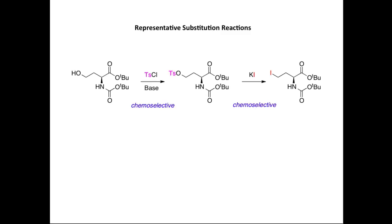We'll finish by looking at representative substitution reactions in synthesis. The first example starts with a protected amino acid derivative bearing a carbamate, an ester, and an alcohol. The goal is to convert the alcohol to the corresponding iodide. In the first step, tosyl chloride in the presence of base converts the alcohol into a tosylate — this is chemoselective, as the tosyl chloride only reacts with the alcohol and not the ester or carbamate. In the second step, reaction with I- from potassium iodide gives an SN2 substitution: the nucleophile attacks while the tosylate ion leaves, forming the primary iodide product.